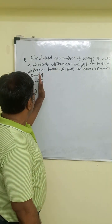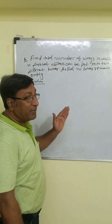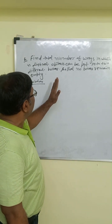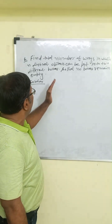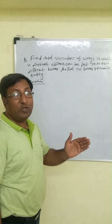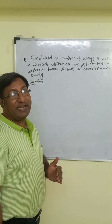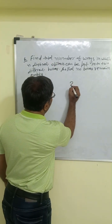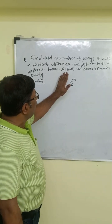Next question: find the total number of ways in which n distinct objects can be put into two different boxes so that no box remains empty. Total number of objects is n, we have to put them into two boxes, and every object has two choices, so total ways is two to the power n.